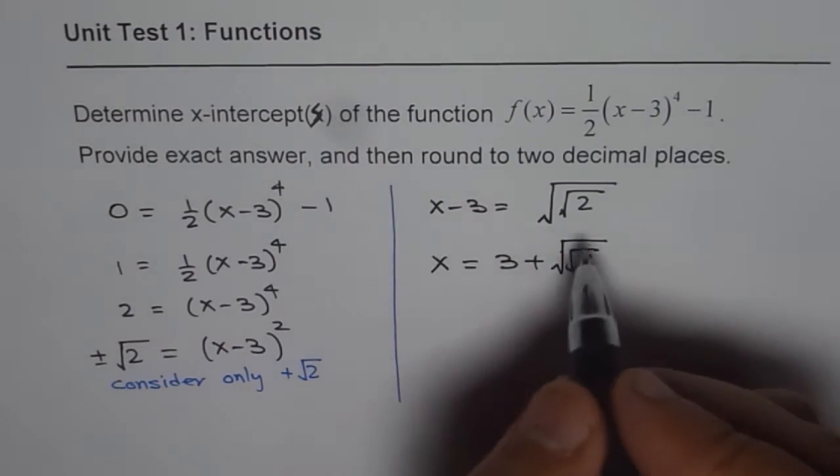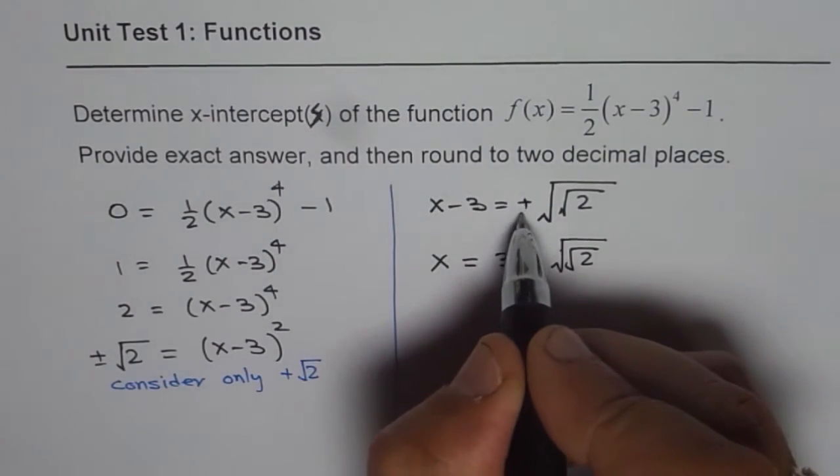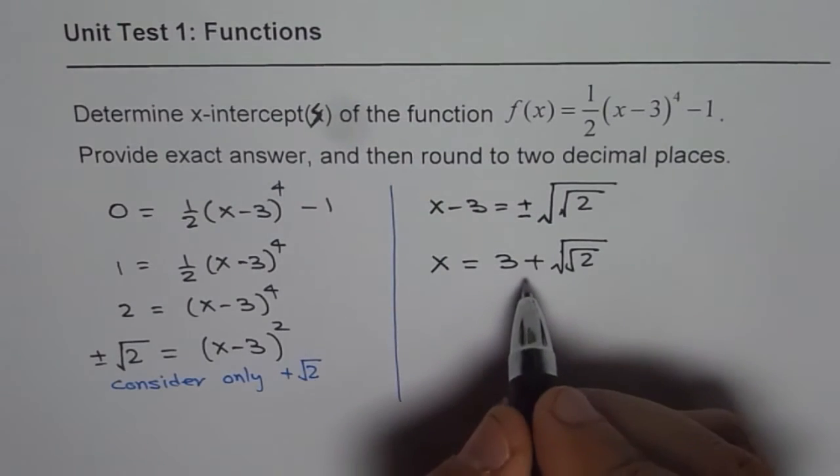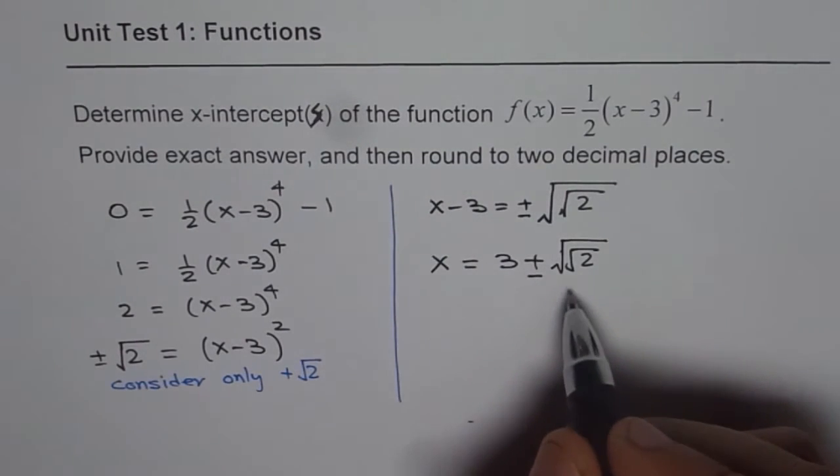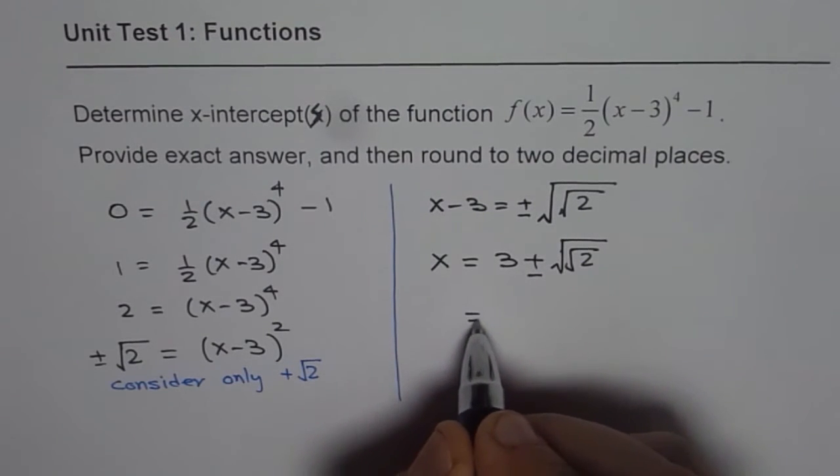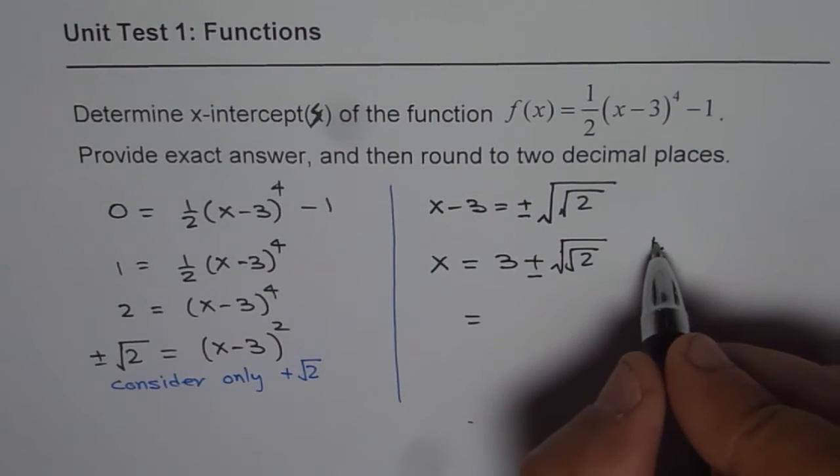Now to find, okay, now when we do this square root, then we have to write plus and minus. Both are valid. So the answer is 3 plus or minus square root of square root of 2. Now we can use calculator. So that is the exact answer.